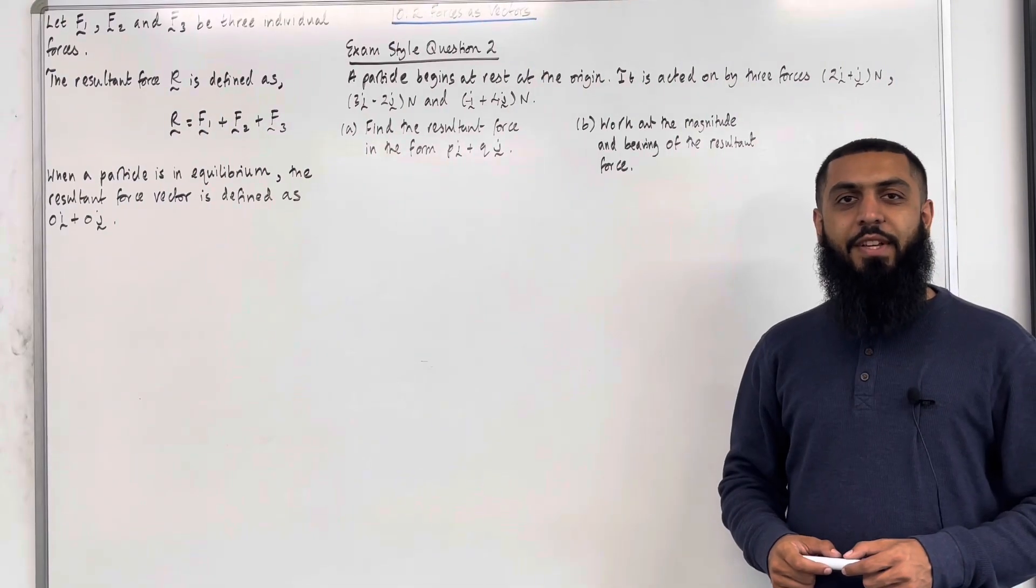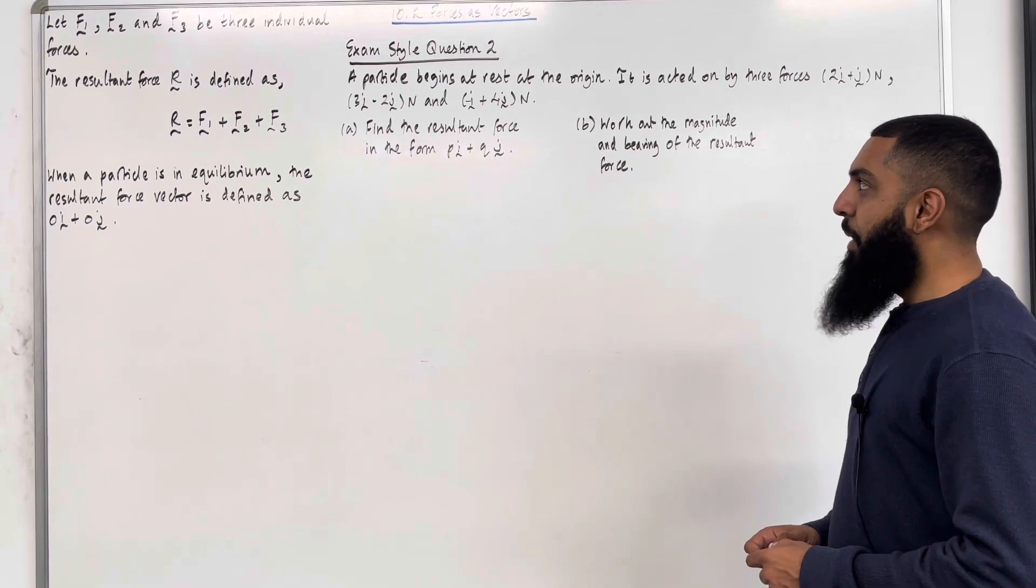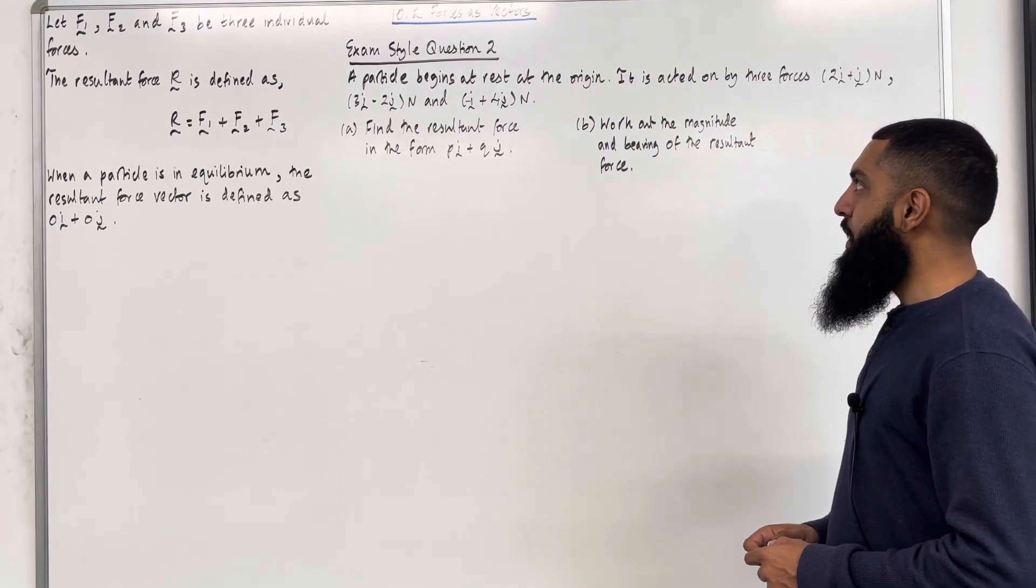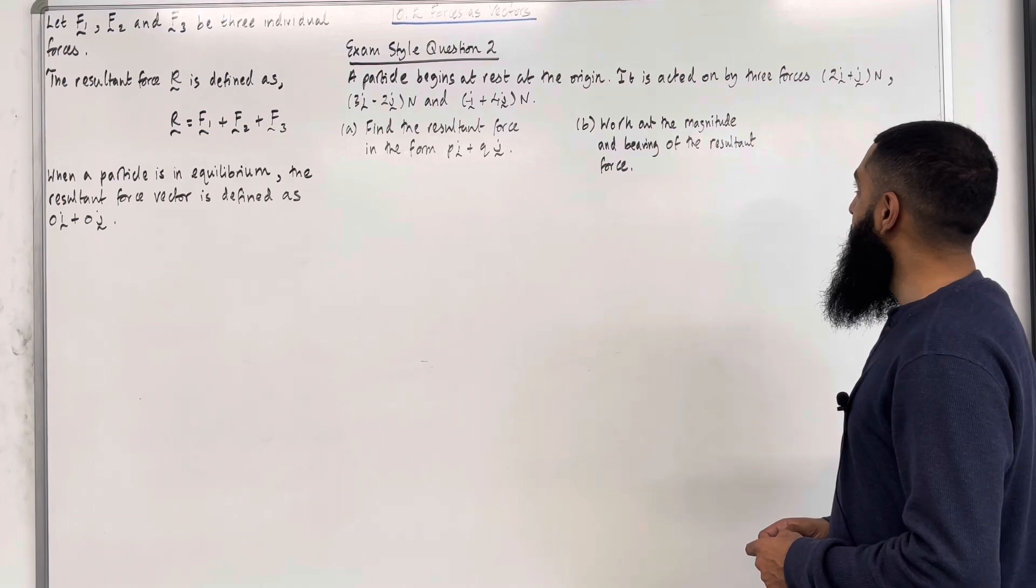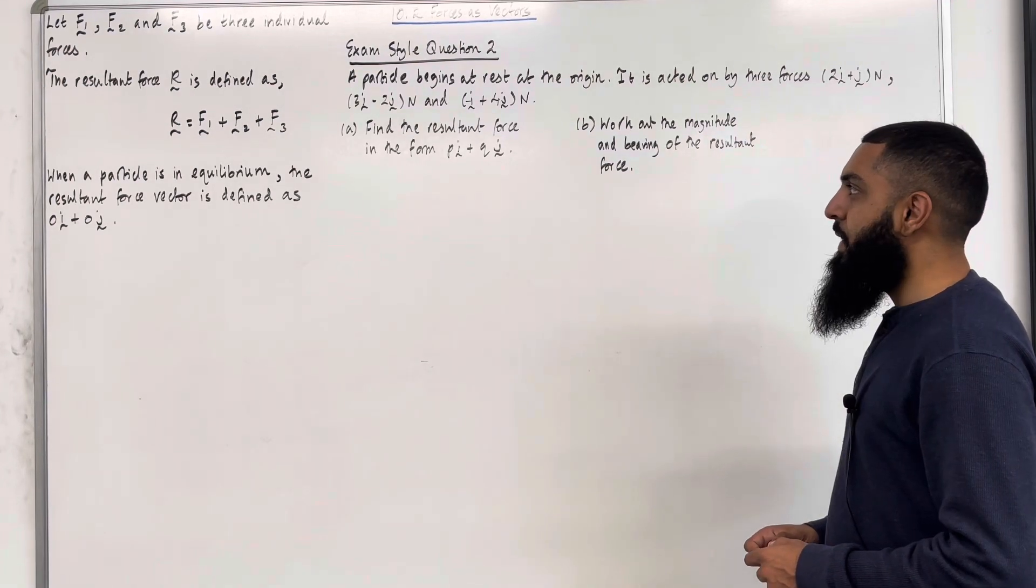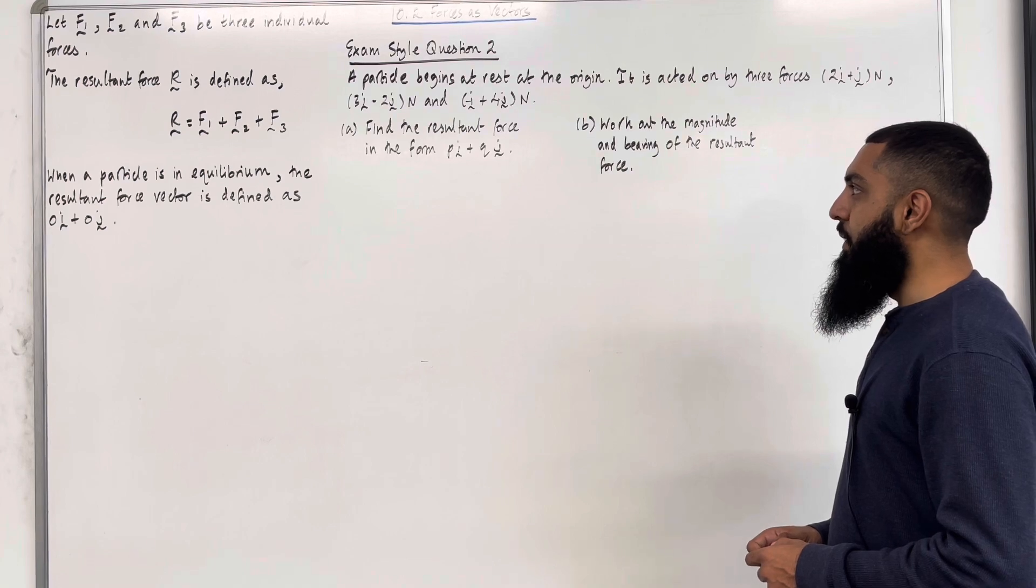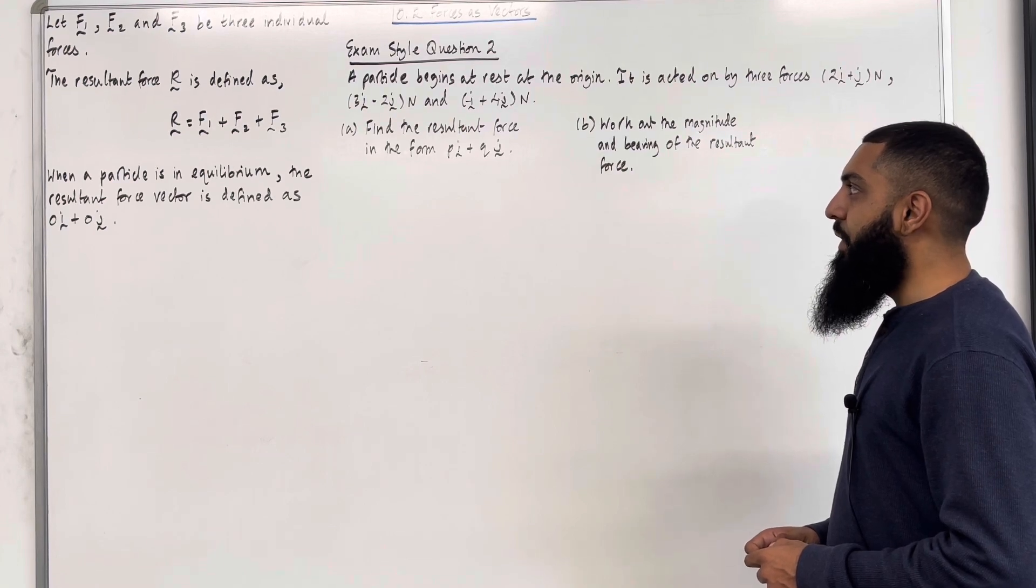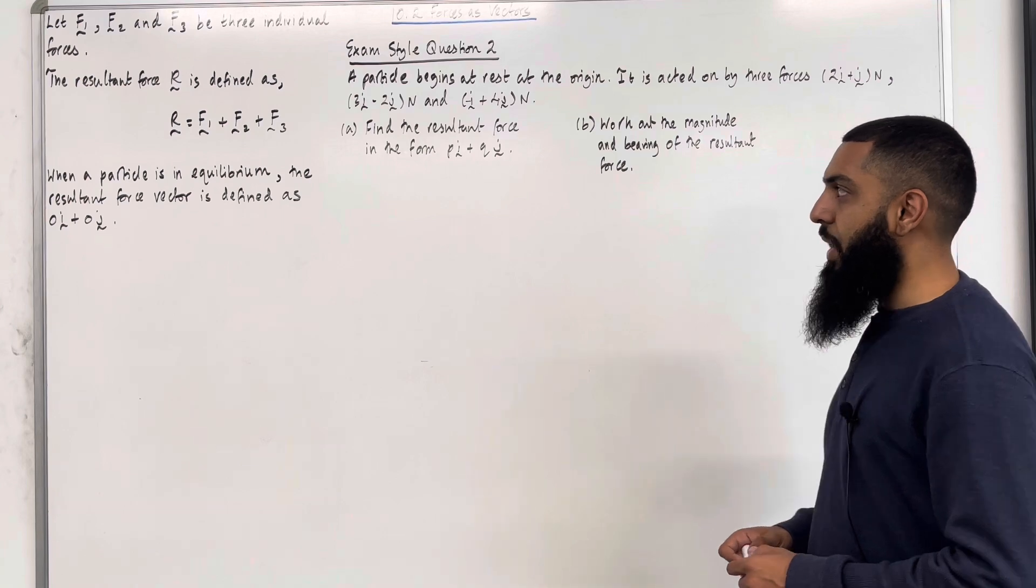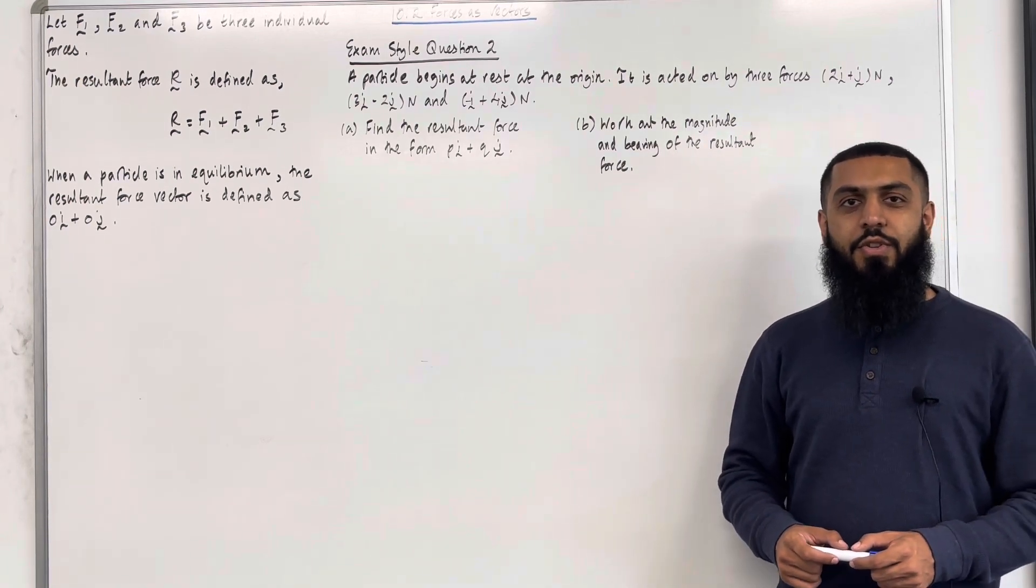Moving on to exam style question 2. A particle begins at rest at the origin. It is acted on by three forces, 2I plus J Newtons, 3I minus 2J Newtons, and minus I plus 4J Newtons. Part A, find the resultant force in the form PI plus QJ. Let's have a look at the solution to part A.